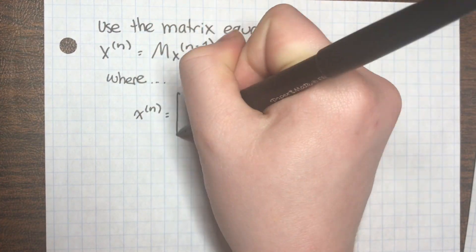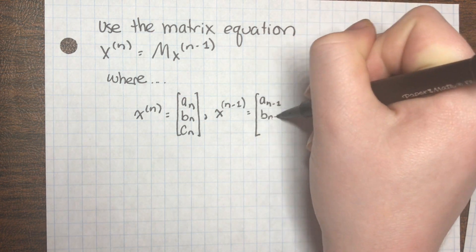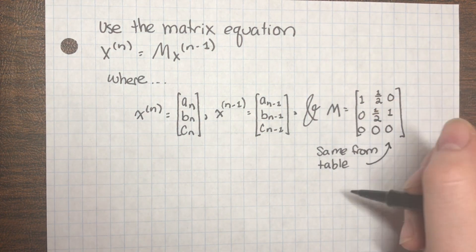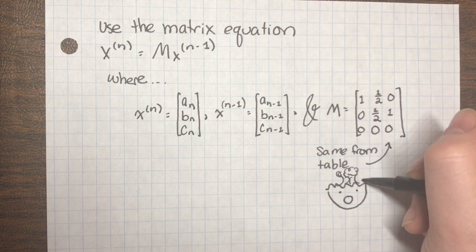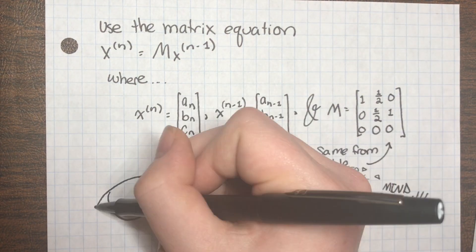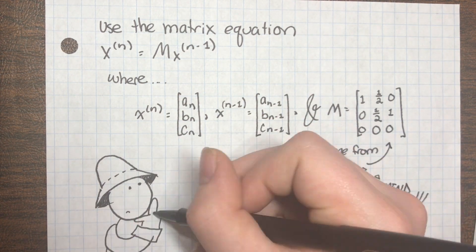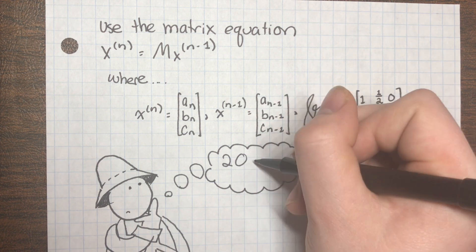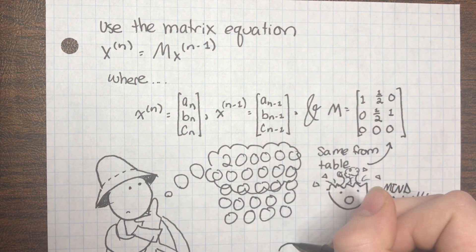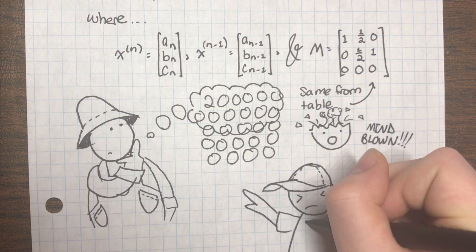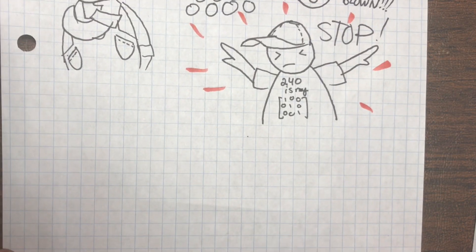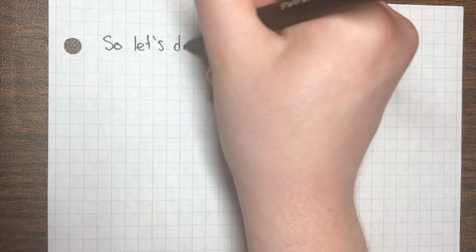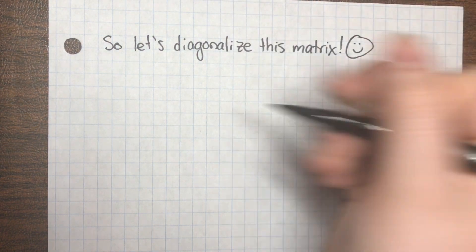The matrix M is exactly, number for number, what we found in the table — pretty cool. But the farmer didn't specify how many generations ahead he was thinking. It could be 2, so we could just square the matrix. But what about 20 generations? 200? 200 million? We would not want to do that kind of matrix multiplication. However, there is a handy trick about raising matrices to high powers: diagonalization. So let's diagonalize this matrix.